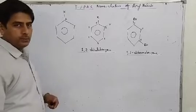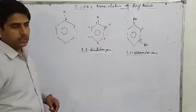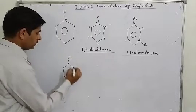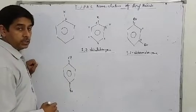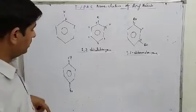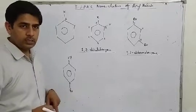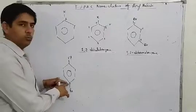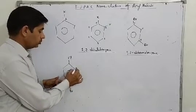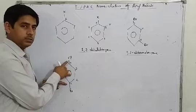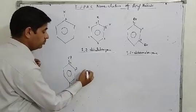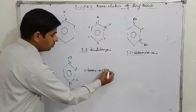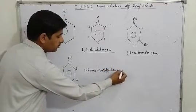Similarly, if you have different types of halogens, you write them alphabetically. For example, if you have chlorine and bromine on the ring, note the numbering: give priority to whichever halogen comes first alphabetically. Bromo (B) comes before chloro (C), so: 1-bromo-4-chlorobenzene.